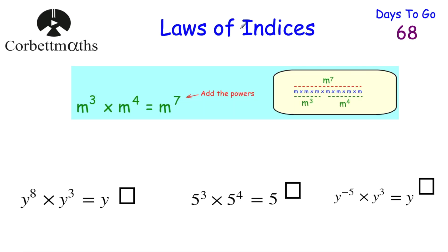Today we're going to be looking at laws of indices. So let's have a look at our first law. If we're multiplying things with the same base, we can add the powers. For instance, if we had M cubed multiplied by M to the power of 4, we could add the powers: 3 plus 4 is equal to 7, so that would be M to the power of 7.